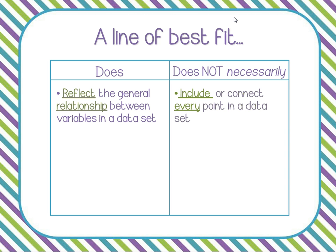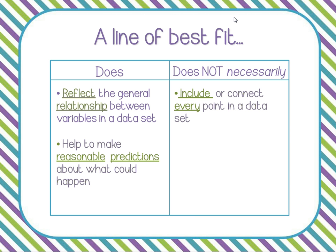You might have a line of best fit that doesn't include any of the points in your data set, or maybe only one or two. You could have one that includes all the points, but it doesn't have to. Also, the line of best fit is useful in helping us make predictions. We can take the data we have and predict what the data might be under different circumstances. It helps us make reasonable predictions, but it does not show us exactly what will happen — it's not perfectly accurate every time.